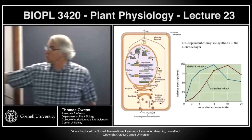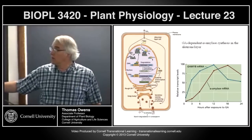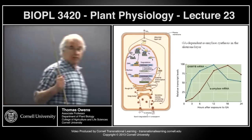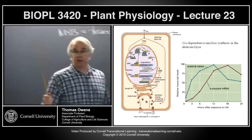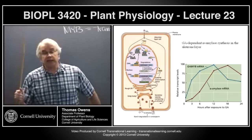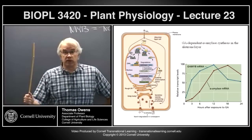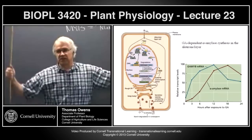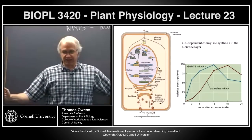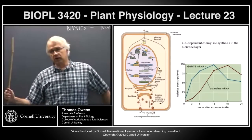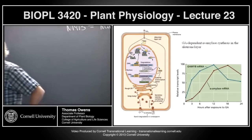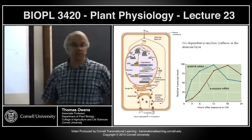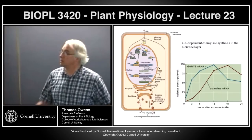The alpha-amylase genes are transcribed, and the messenger RNA is translated on ribosomes bound to the ER, because alpha-amylase is going to be exported from the cell. The endosperm doesn't really have intact cells anymore — the starch is just sitting out in that storage region. So the alpha-amylase is actually being exported from the cell.